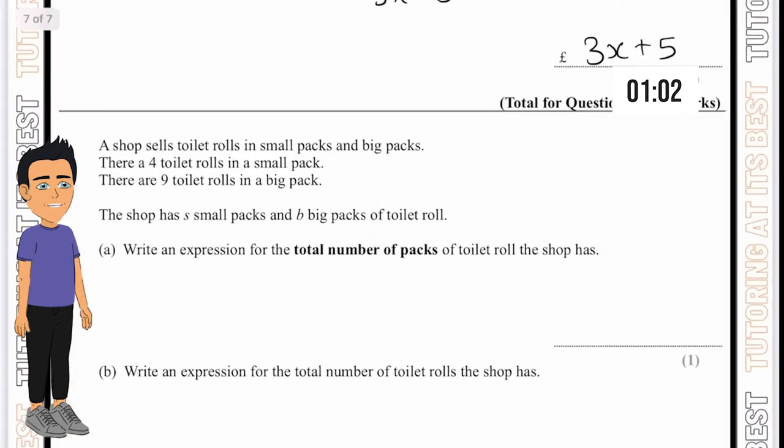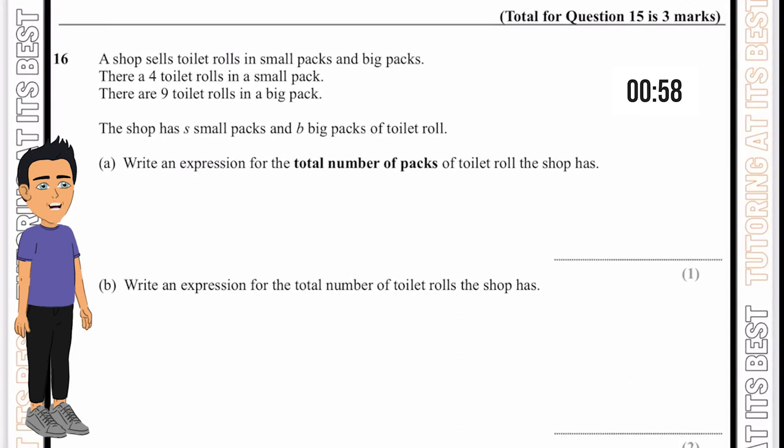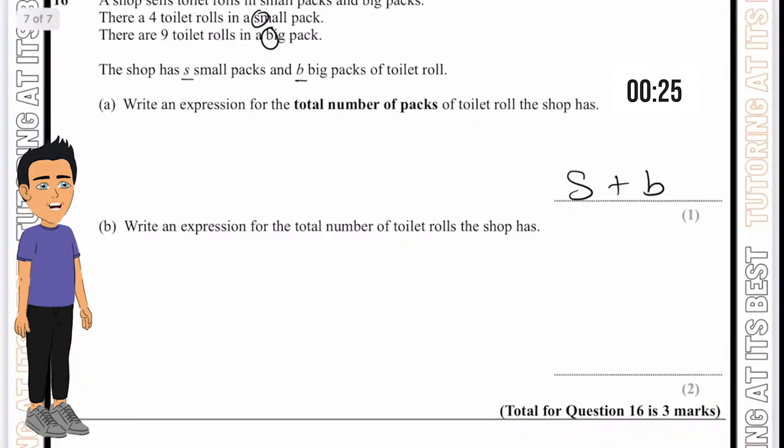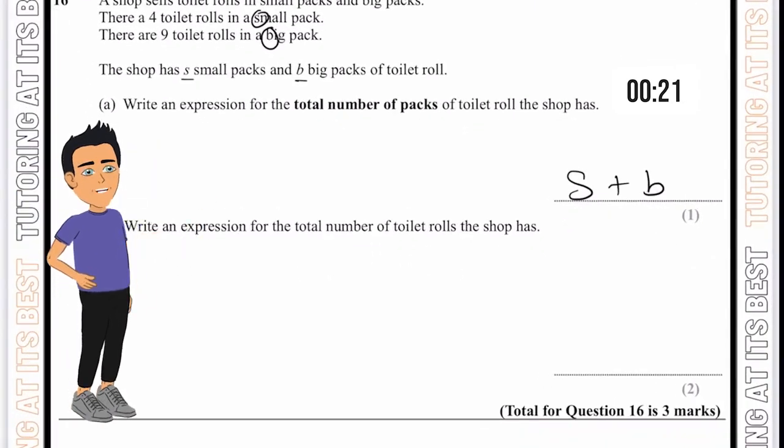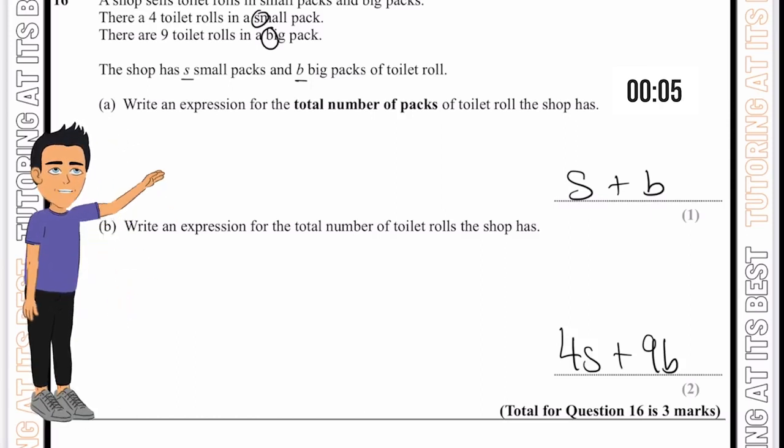The final question. A shop sells toilet rolls in small packs and big packs. There's a four toilet roll pack and a nine toilet roll pack. Write an expression for the total number of packs. Let's take the s from the small and b from the big. We can write that as s plus b, where s is the small pack and b is the large pack. Part b, write an expression for the total number of toilet rolls the shop has. We'll take 4s plus 9b. Now we know whichever number of toilet rolls somebody purchases, this is the best way to calculate it.